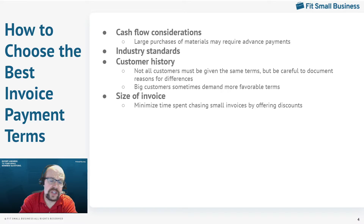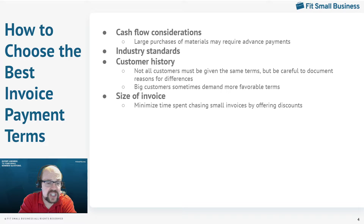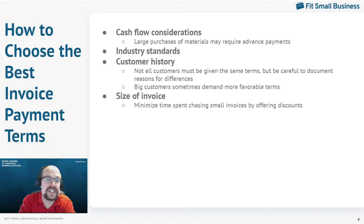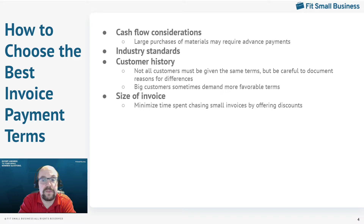A third consideration is your customer history. Not all customers have to be given the same payment terms. Long-standing customers who have been very good might be offered an early payment discount or a longer payment period — for example, net 60 instead of net 30. The one thing I would warn against: make sure you have a written policy in place as to how you determine payment terms, that you stick to that policy, and that you have written proof of how you're following it with each customer. This is to avoid any claims of discrimination or mistreatment.